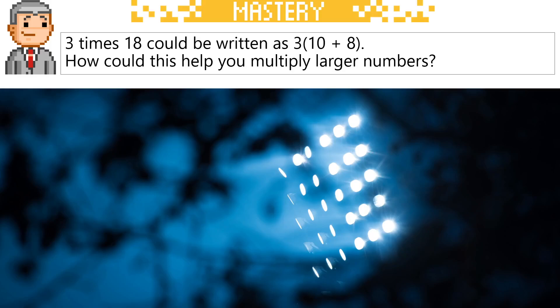Let's finish off with this question. 3 times 18 could be written as 3 brackets, 10 plus 8. How could this help you multiply larger numbers?